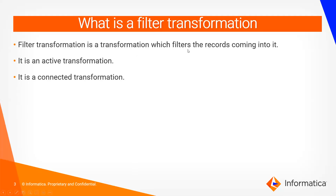What is a filter transformation? It is nothing but a transformation which filters the records — the name itself tells you it filters the records passing into it. It is an active transformation and a connected transformation. Active means the number of records coming into the transformation is not equal to the number of records outputting from it. The filter transformation takes a bunch of records, checks a condition, and only those records that satisfy the condition are passed to the next transformation.